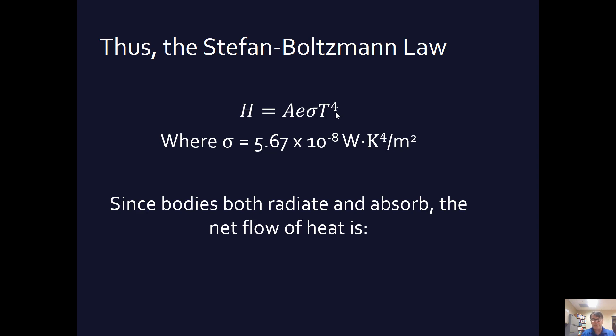Since bodies both radiate and absorb, the net flow of heat is going to be the H net is going to be this times the temperature difference, where this S is the temperature of the surroundings to the fourth power. And, basically, if this ends up being positive, then it's giving off heat, because in that case, the temperature being emitted is greater than the temperature of the surroundings. If this ends up being negative, then that means that energy is being absorbed, and the temperature of the surroundings is greater than the temperature of the thing.